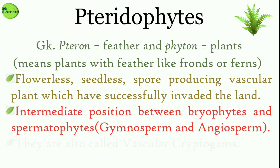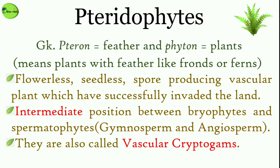Let's start with the term pteridophytes. The Greek word 'pteron' means feather and 'phyton' means plants, so the word pteridophytes literally means the plants with feather-like fronds, or ferns. These plants are flowerless, seedless, and spore-producing vascular plants which have successfully invaded the land.